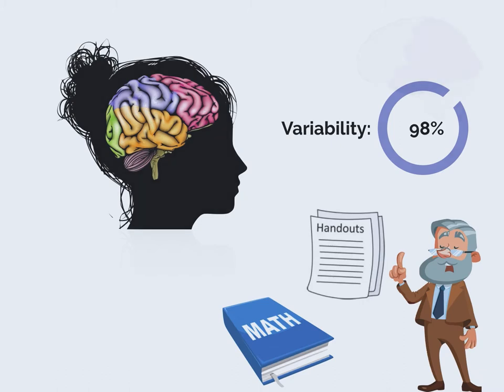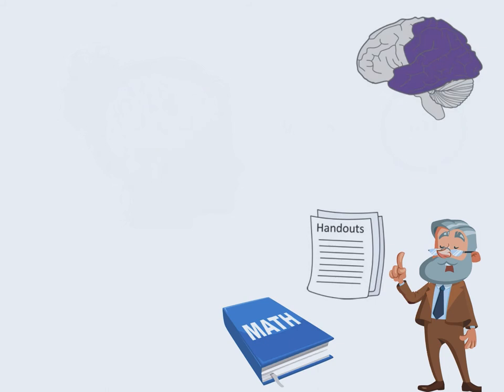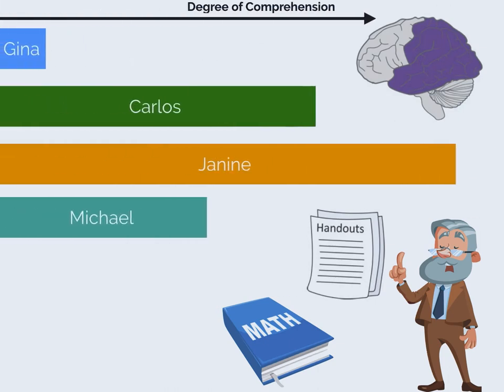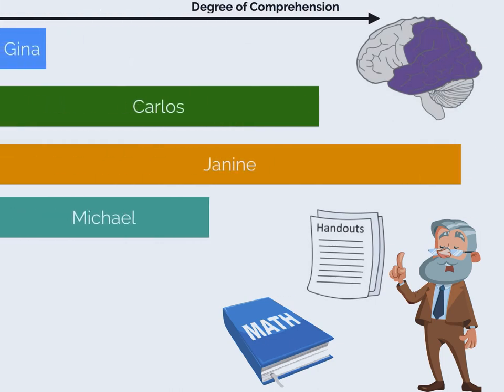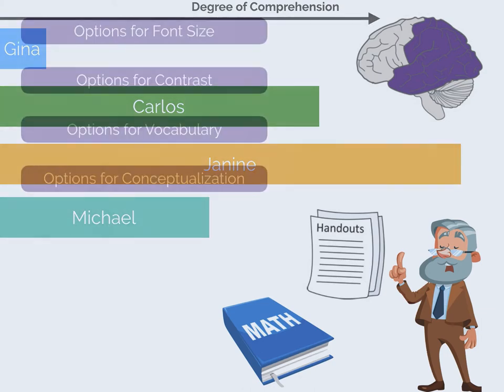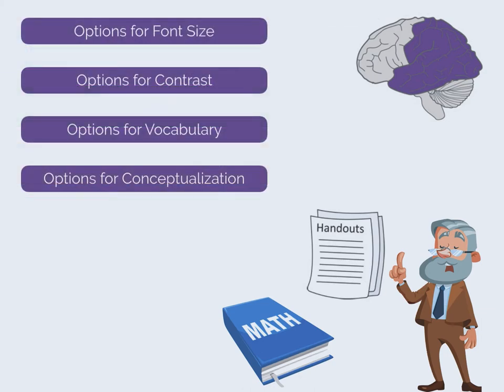Textbooks and worksheets, perfectly adequate for some students, can stop others in their tracks. These static materials cannot be adjusted to support learners who might need different font size, color contrast, vocabulary level, or method of answering the questions.